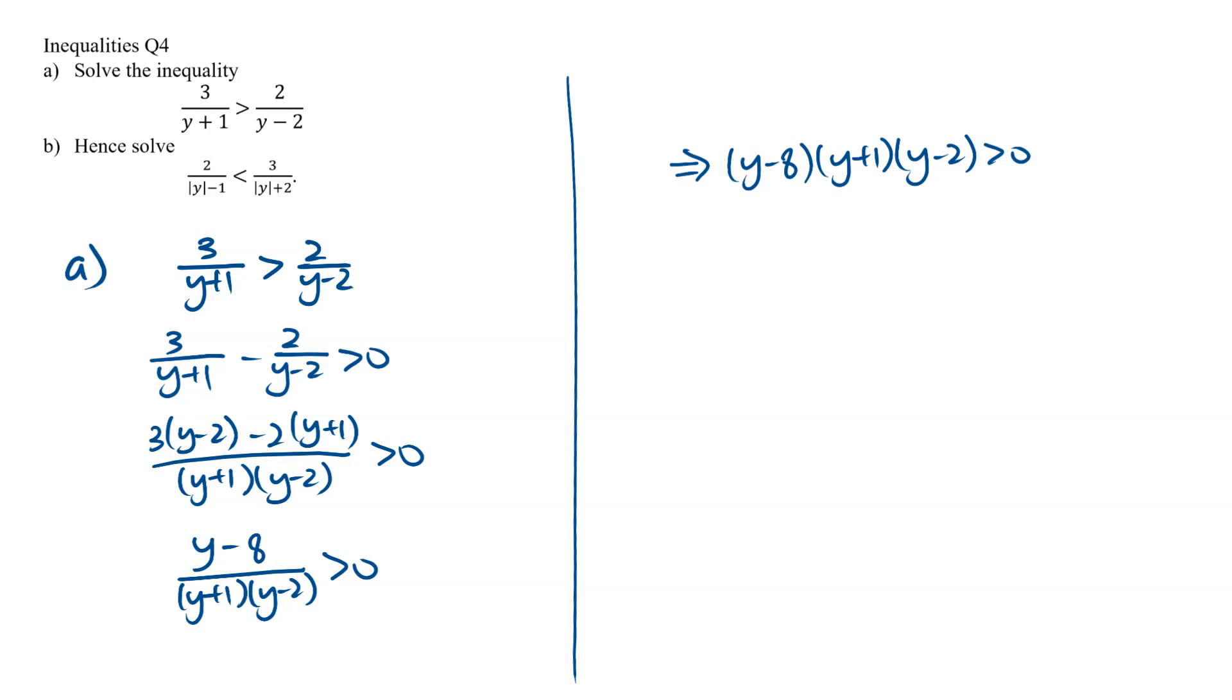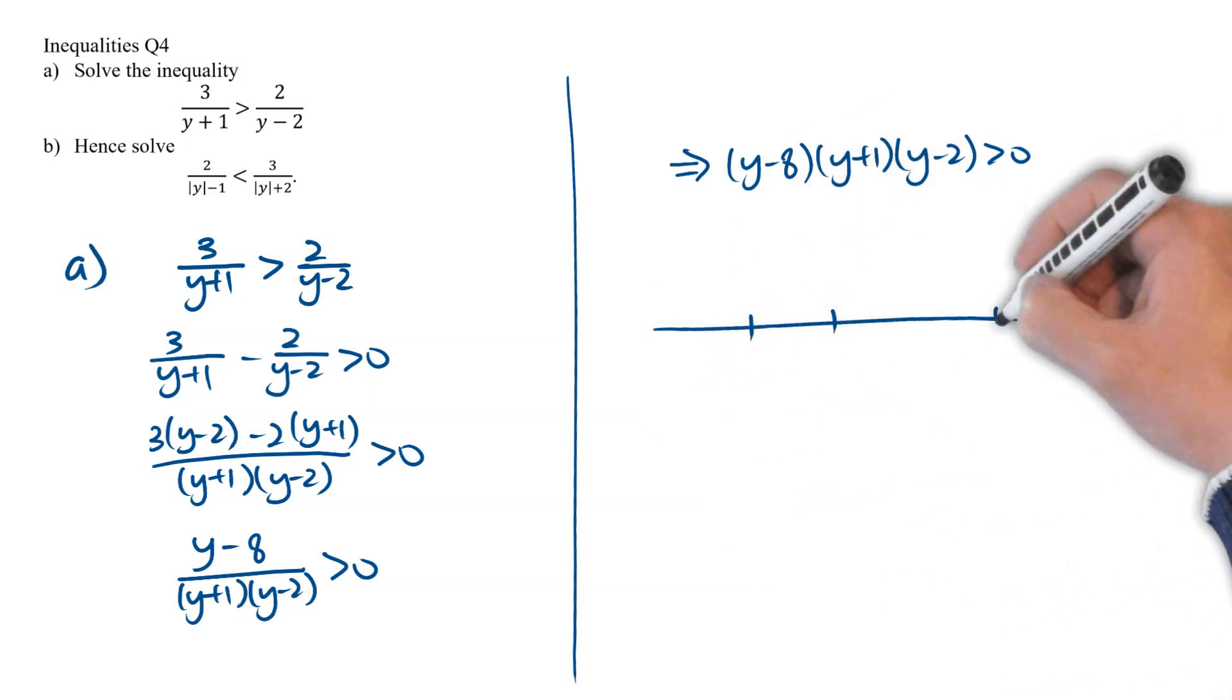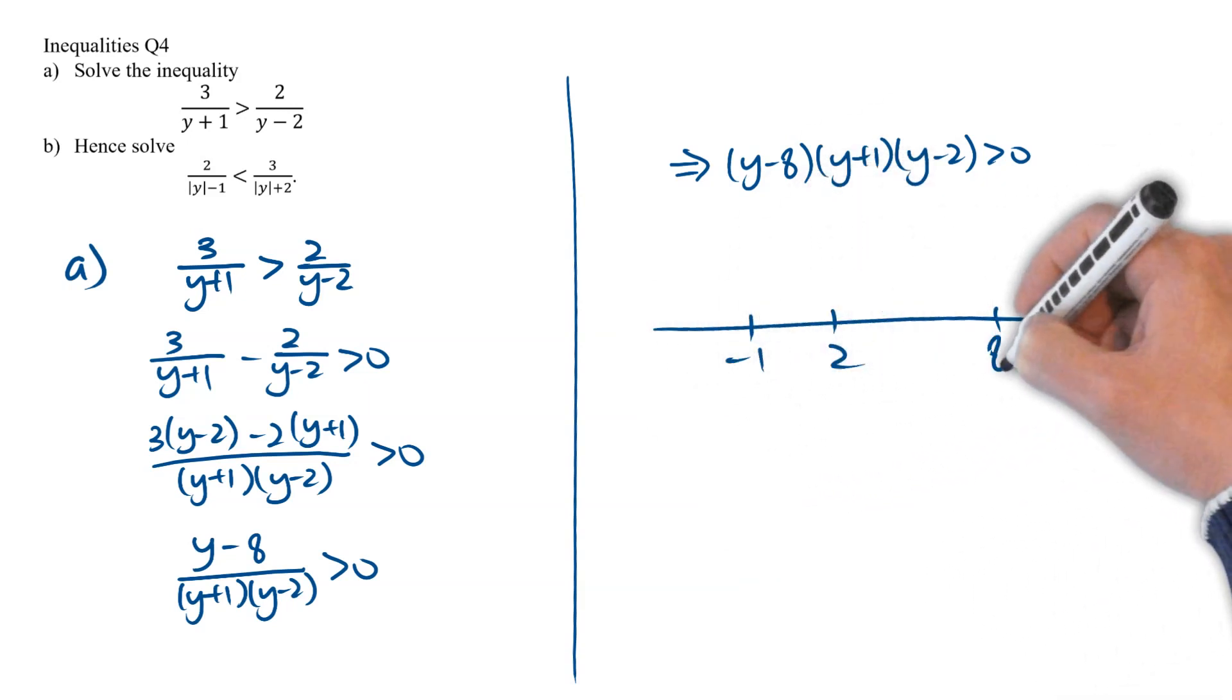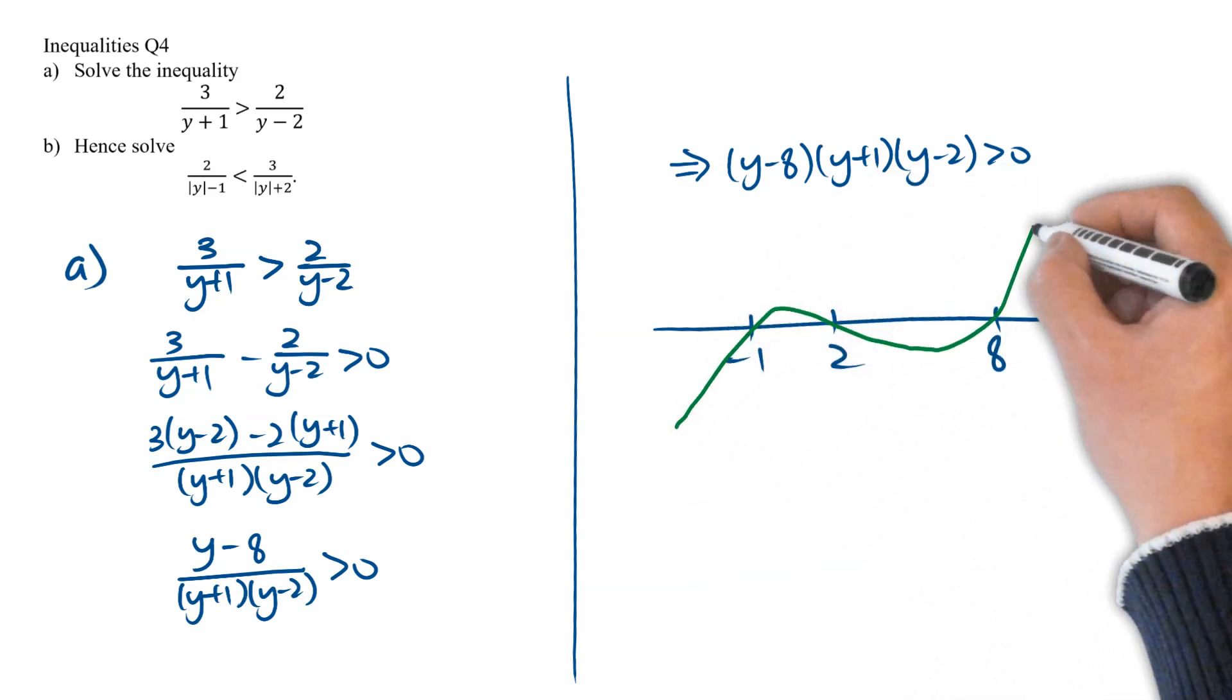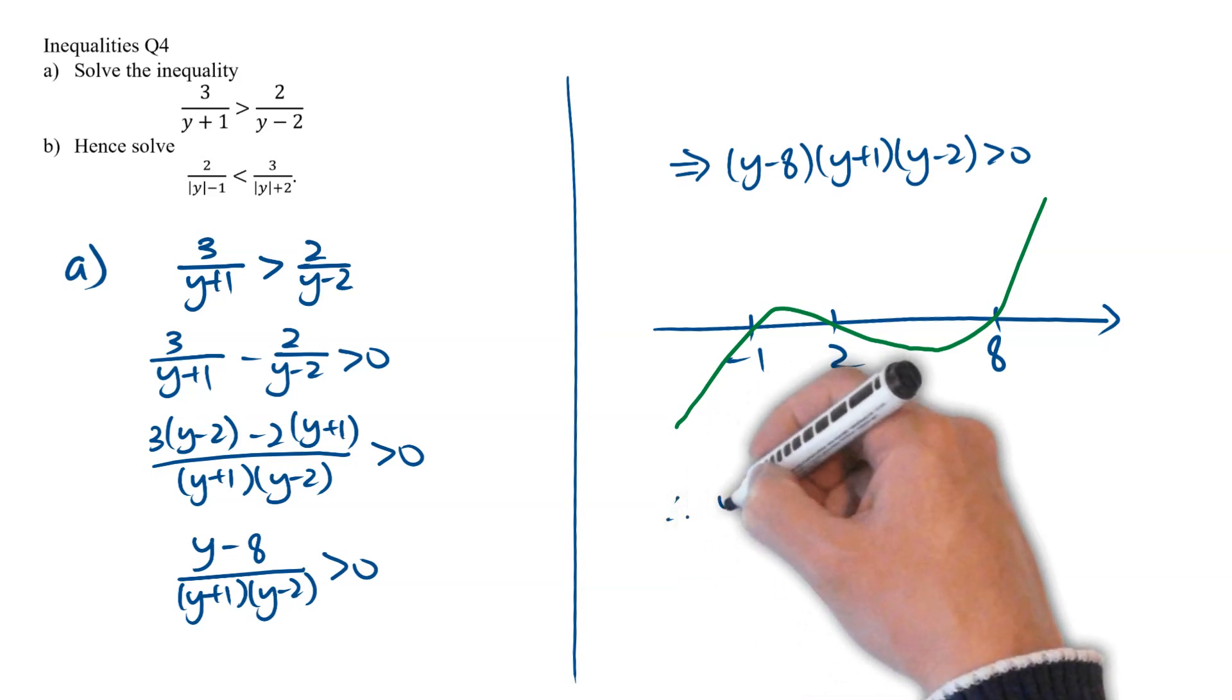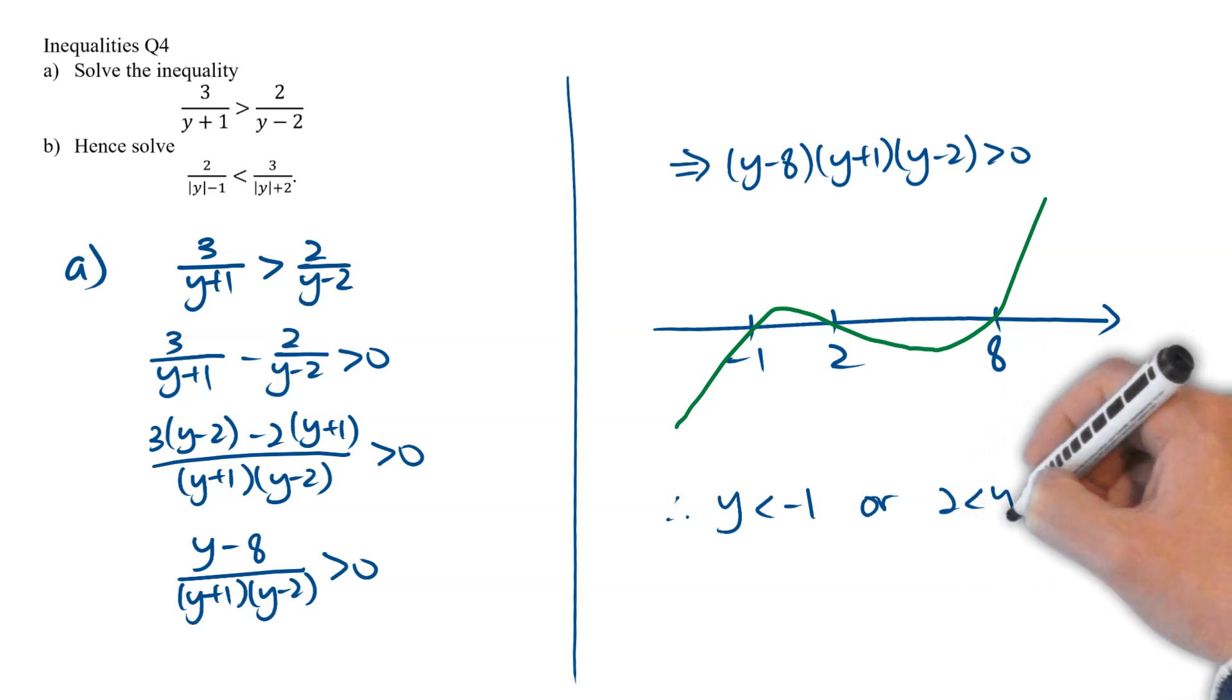Now, with this factorized form, we can draw the graph out. On our x-axis, we have the roots minus 1, 2, and 8. And our curve is going to go this way to cut the 3 roots. And therefore, from this graph, we can see that the solution is y less than negative 1, or y between 2 and 8.